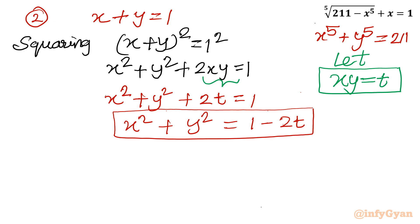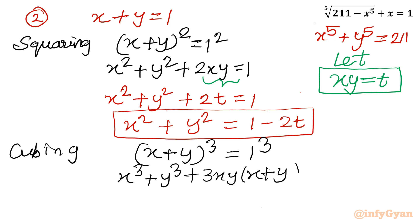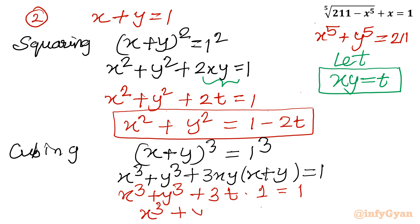Now I will consider cubing equation 2. So x plus y whole cube equals 1 whole cube. Using the formula a³ + b³ + 3ab(a+b): x^3 plus y^3 plus 3 times xy times (x plus y) equals 1. Substituting xy = t and x+y = 1, we get x^3 plus y^3 plus 3t equals 1, so x^3 plus y^3 equals 1 minus 3t.